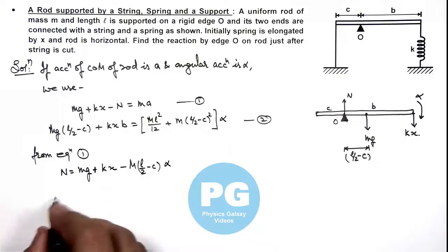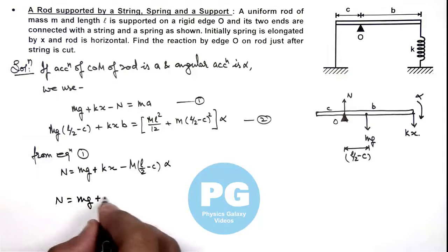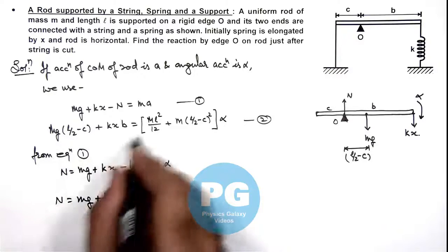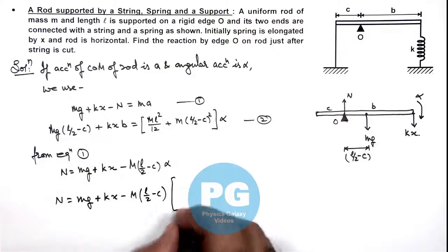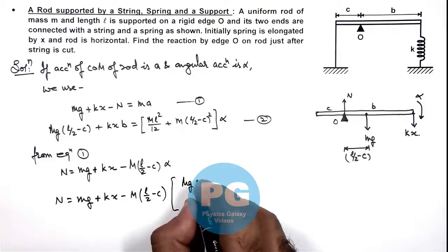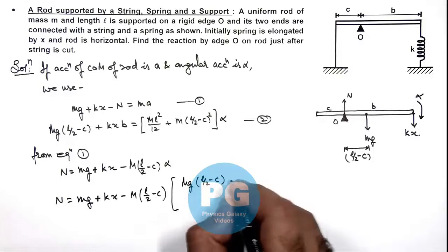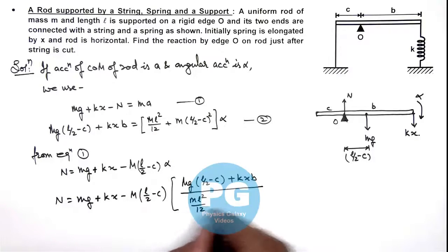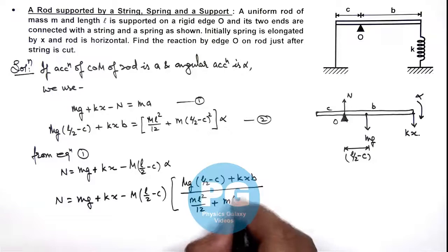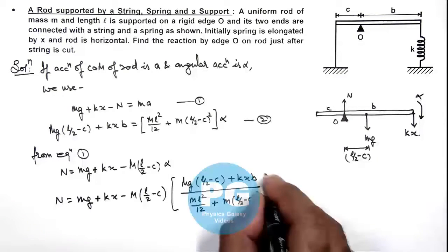So we are getting the value of N is equal to mg plus kx minus m multiplied by, if we substitute the value of alpha over here, you can see this giving us m multiplied by l by 2 minus c and alpha is given as mg multiplied by l by 2 minus c plus kx b divided by this moment of inertia which is ml square by 12 plus m multiplied by l by 2 minus c whole square.